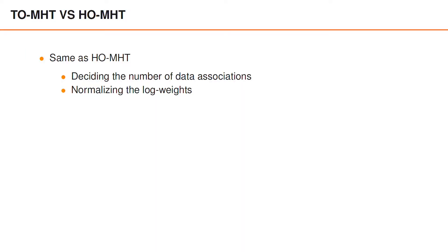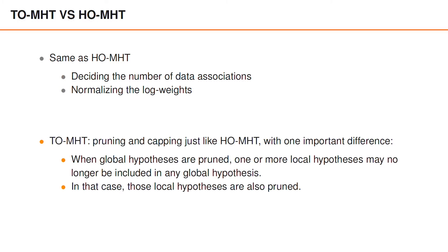Now that we have seen an overview of a track-oriented MHT algorithm, we can compare track-oriented and hypothesis-oriented MHT. In track-oriented MHT, deciding how many data associations to compute for each predicted global hypothesis and normalizing the log weights can be done in exactly the same way as in hypothesis-oriented MHT. Overall, the pruning and capping is also the same, but with one important difference.